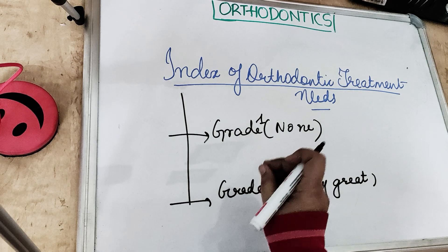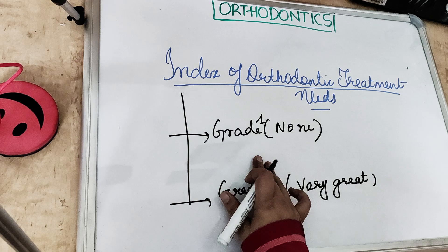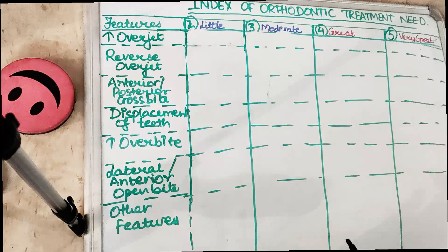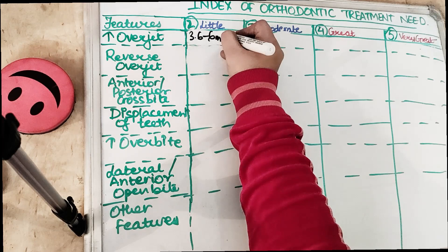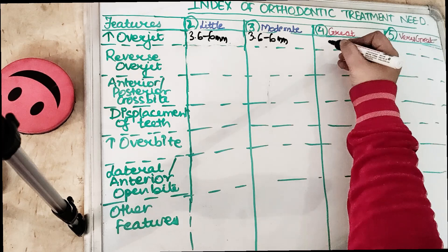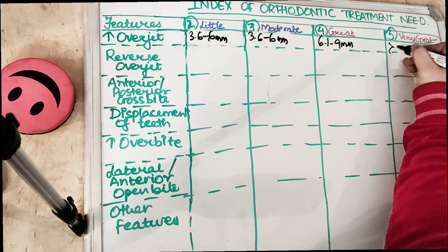Grade 1 is extremely minor malocclusion with displacement of less than 1 millimeter of the teeth, and there is no requirement for orthodontic treatment. Looking at the table: for overjet, Grade 2 ranges from 3.6 to 6 millimeters with competent lips — meaning both lips meet each other at rest. Grade 3 is also 3.6 to 6 millimeters but with incompetent lips, where the lips don't meet each other.